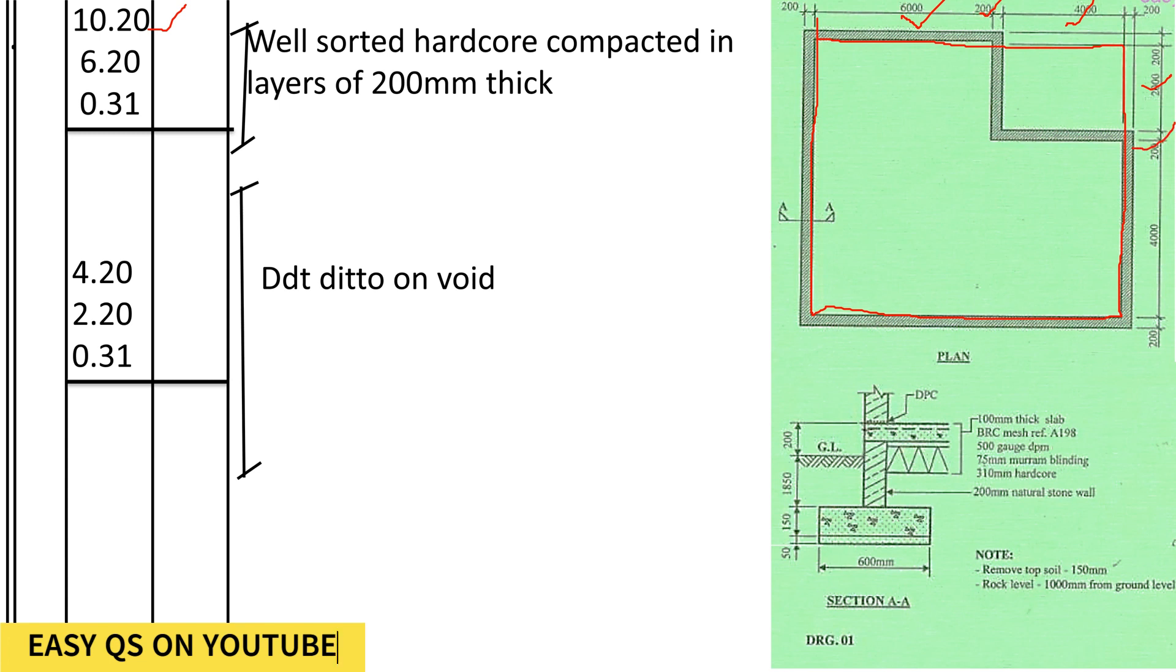plus 200 plus 4000, it shall be 6,200. Then the depth of the hardcore: 0.31. Then we shall deduct for the void. You see, we are not laying hardcore where this is